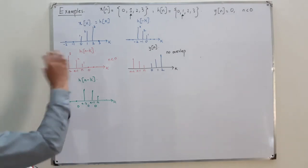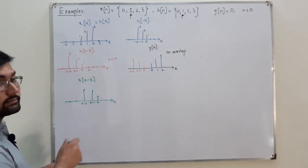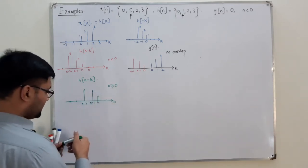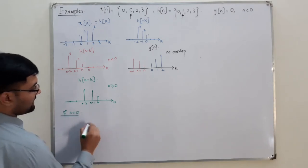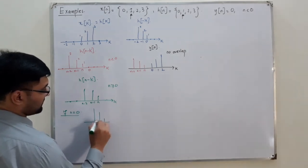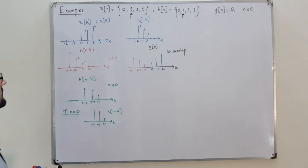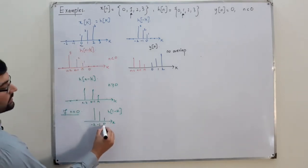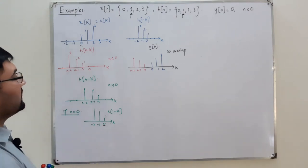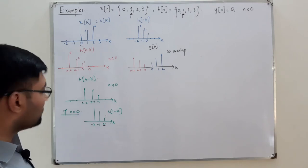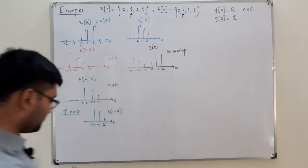For n greater than or equal to 0, we consider different cases. If n equals 0, h(n minus k) = h(minus k) is located at 0, minus 1, minus 2. The product only exists at position 0: x(0)=1 times h(0)=1, so y(0) equals 1.